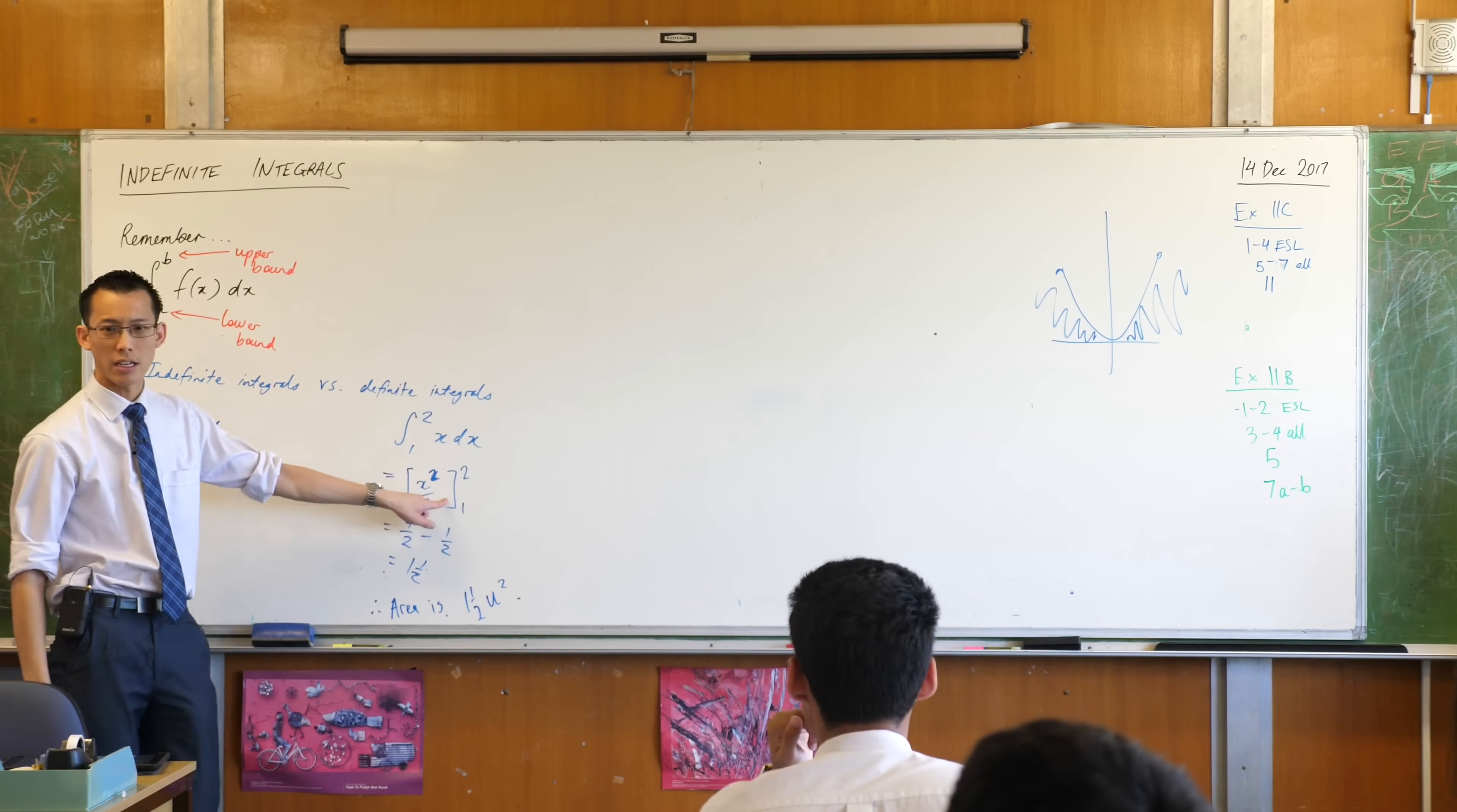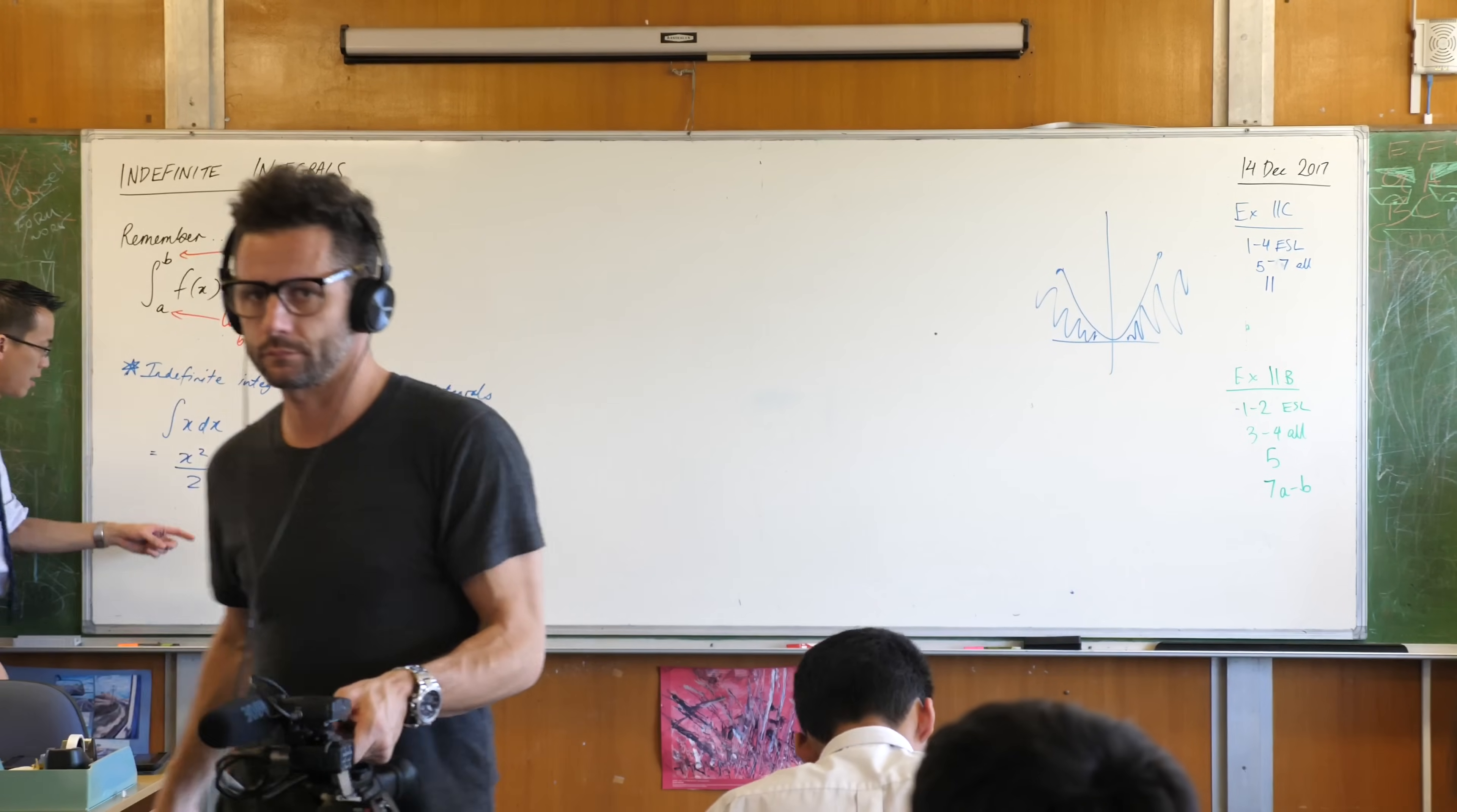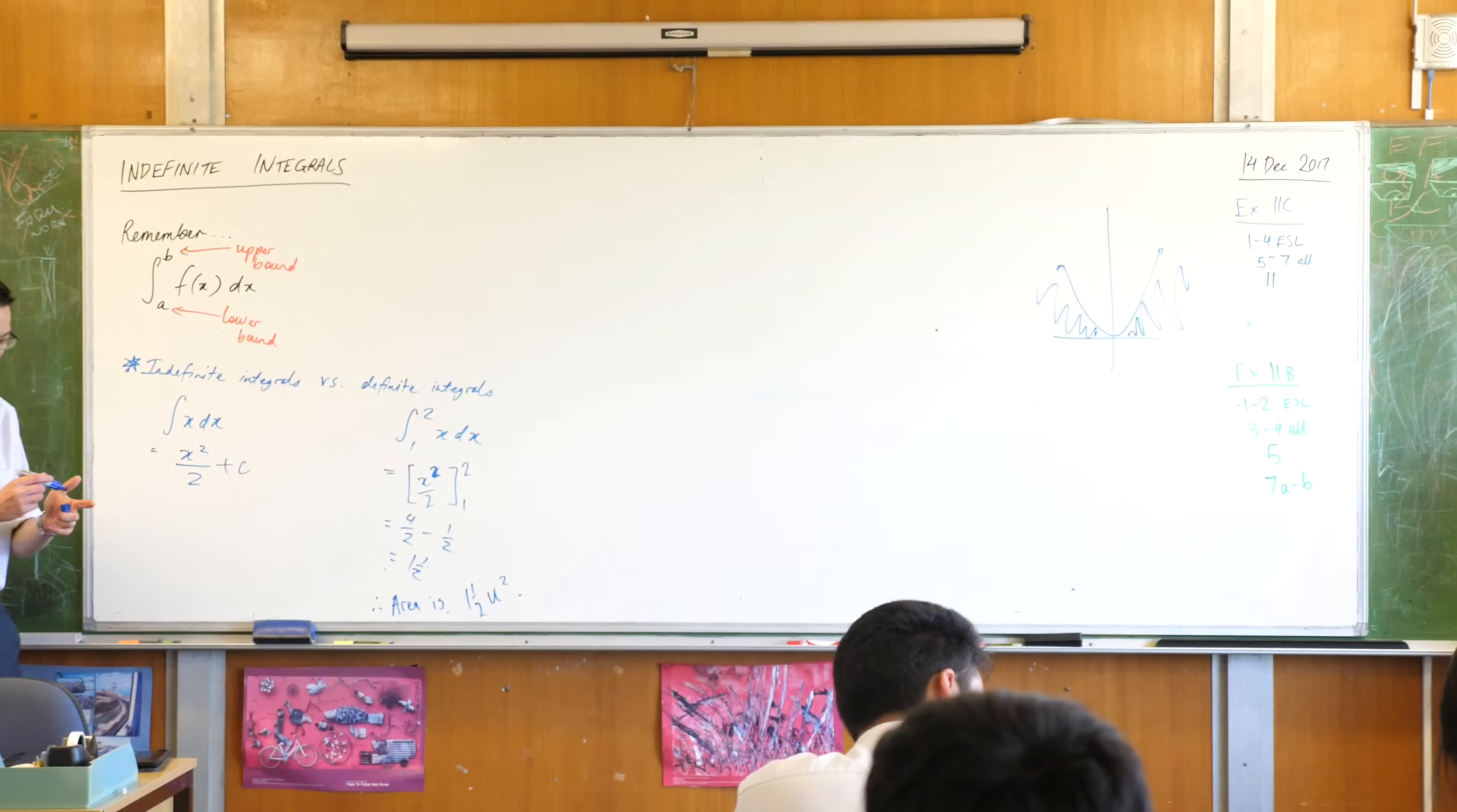Now why didn't I include a plus c here? Do you remember the reason I didn't need to include it? Yeah. See this step here? There we have plus c here, plus c there, it'll disappear. Doesn't matter. OK? But now that I'm not doing that subtraction step, now that I'm not doing that evaluation, I have to bring the plus c back.